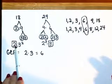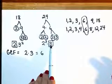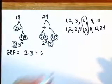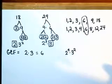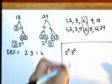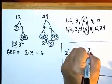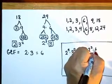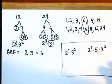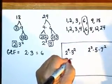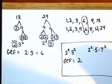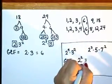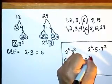So to review: for the GCF, we write down the smallest power of everything that's common. For example, suppose one number has prime factors 2 to the 4th times 3 squared, and another has 2 squared times 5 times 7 squared. The only thing common to both is 2, and we pick the smallest power, which is 2 squared. So the greatest common factor would be 2 squared, or 4.